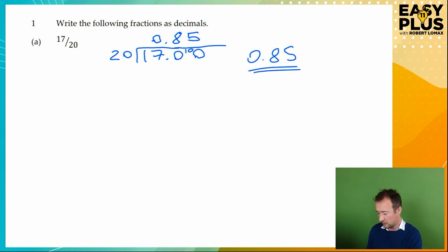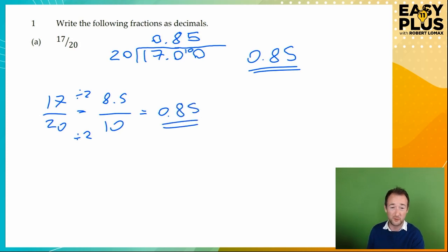Now, there are other ways you could approach this, because we have a fraction over 20, and 20 is quite a simple number to deal with. So for example, we can say that 17 over 20 is the same as something over 10. What have we done here? We've just divided by 2. What's 17 divided by 2? Well, 16 divided by 2 is 8, so 17 divided by 2 must be 8 and a half. And 8.5 divided by 10 is, of course, 0.85. Why? Because when you divide something by 10, you just take the decimal point here and plonk it off one space to the left.